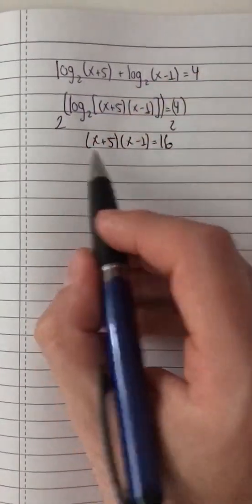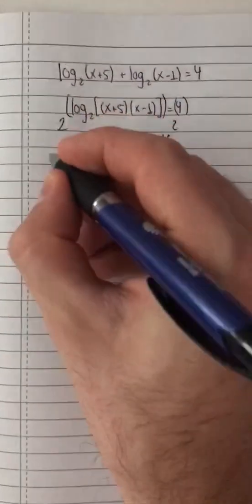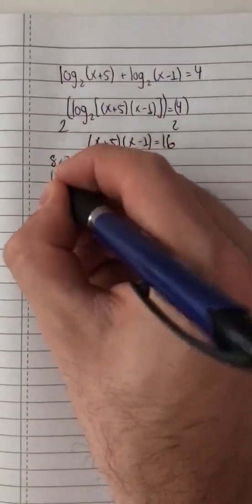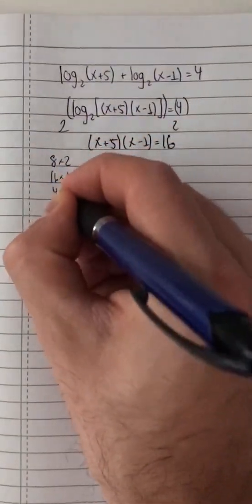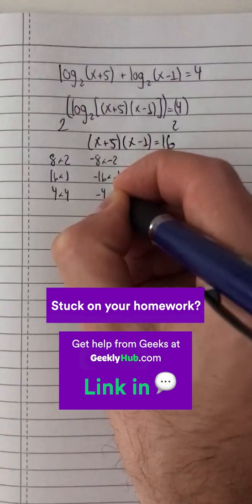Instead of solving a quadratic equation, I'm going to see two numbers that multiplied give me 16. I could have 8 times 2, 16 times 1, and 4 times 4. Or negative 8 times negative 2, negative 16 times negative 1, negative 4 times negative 4.